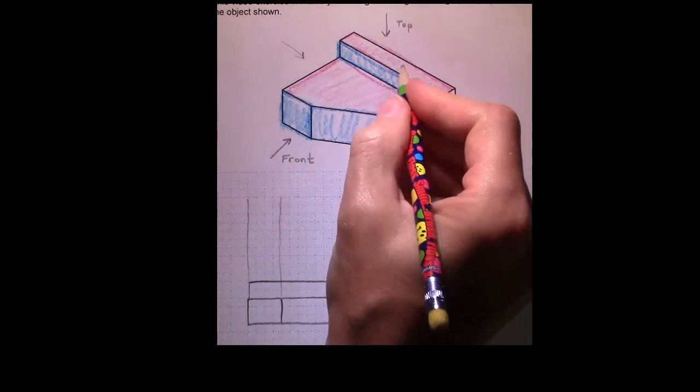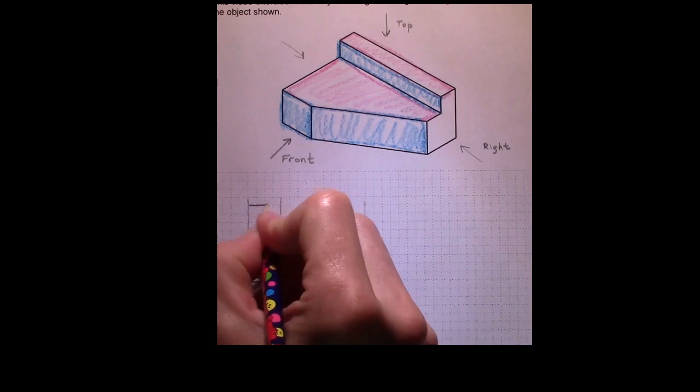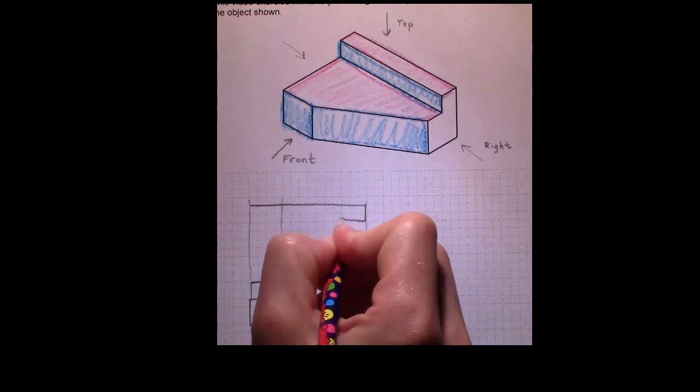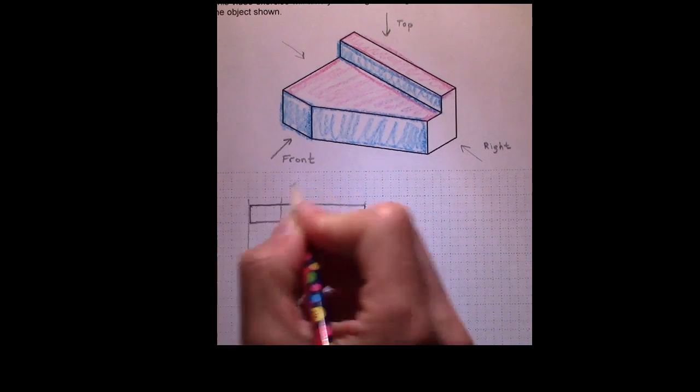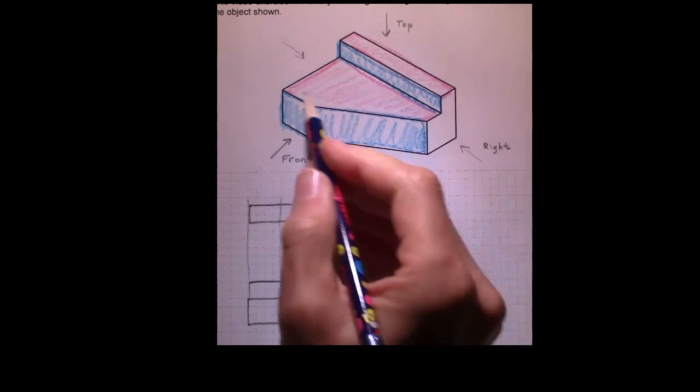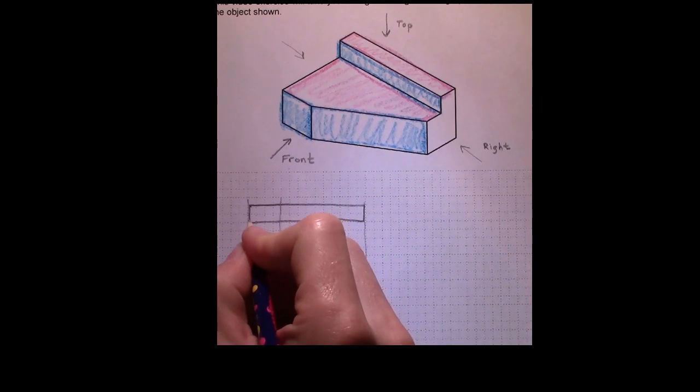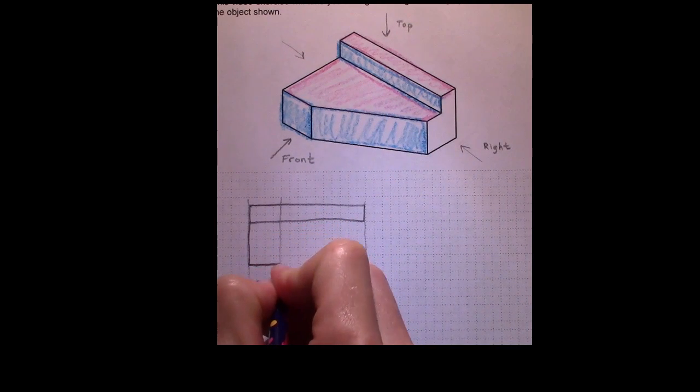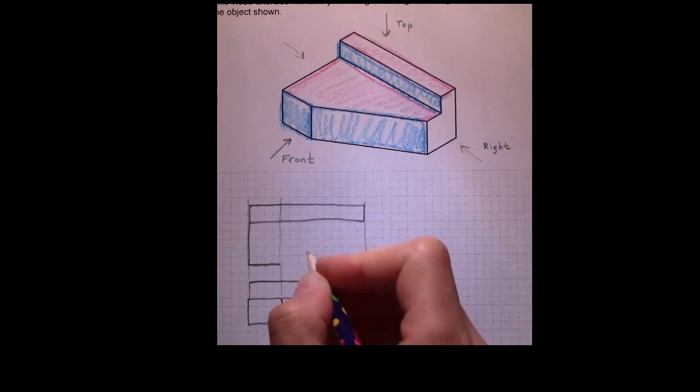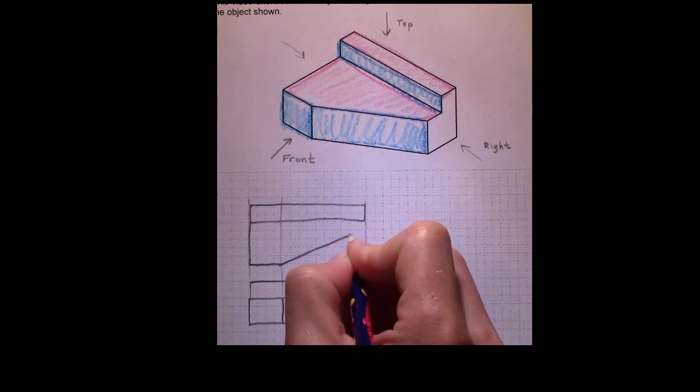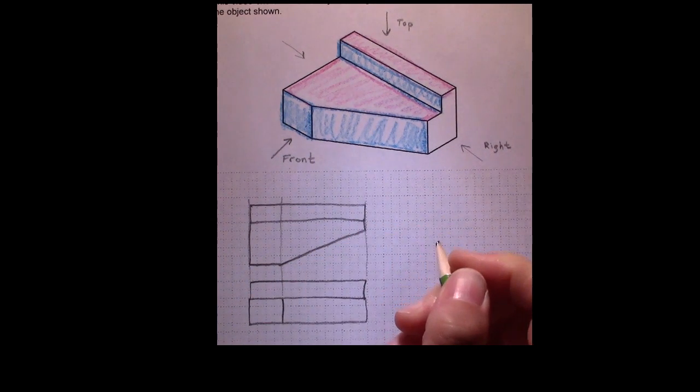So I'm going to fill in this rectangle here first, and then we have this shape. We know by the projector this is where it starts to angle back. And there we go. So that's the top view.